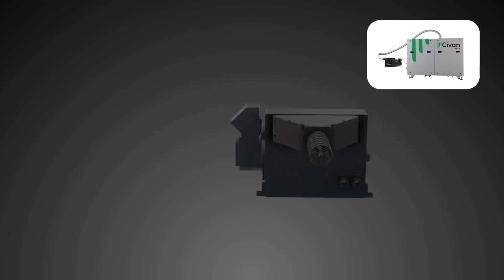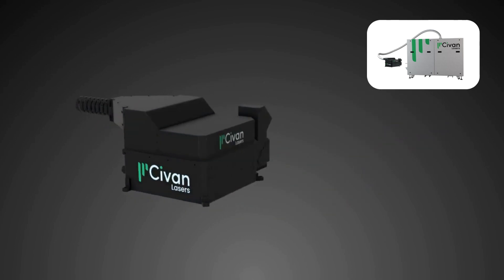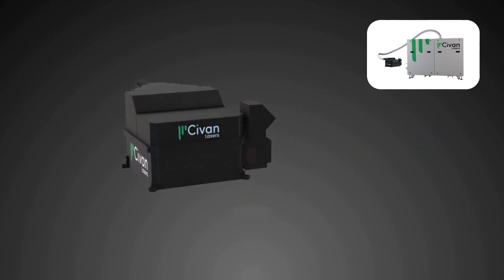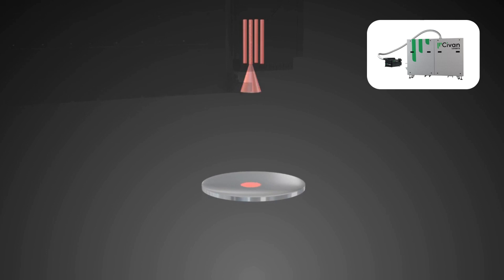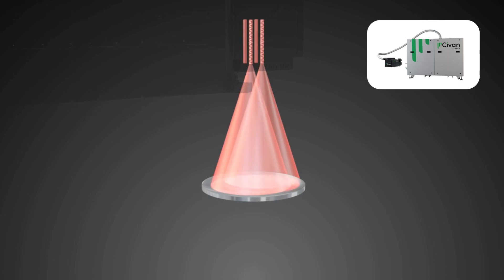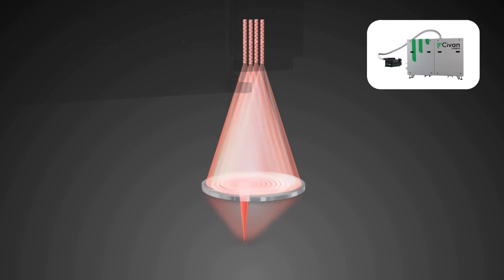Optical phased arrays allow for real-time manipulation of the beam shape by exploiting the overlap and interference of individual laser beams, enabling easy customization of the beam for various materials processing applications.